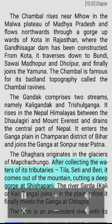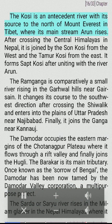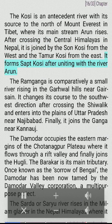The Ghaghara originates in the glaciers of Mapchachungo. After collecting the waters of its tributaries — Tila, Seti, and Beri — it comes out of the mountain cutting a deep gorge at Shishapani. The river Sarda (Kali or Kali Ganga) joins it in the plain before it finally meets the Ganga at Chapra. The Kosi is an antecedent river with its source to the north of Mount Everest in Tibet, where its mainstream — the Arun — rises. After crossing the central Himalayas in Nepal, it is joined by the Sun Kosi and the Tamur Kosi, forming the Sapt Kosi.